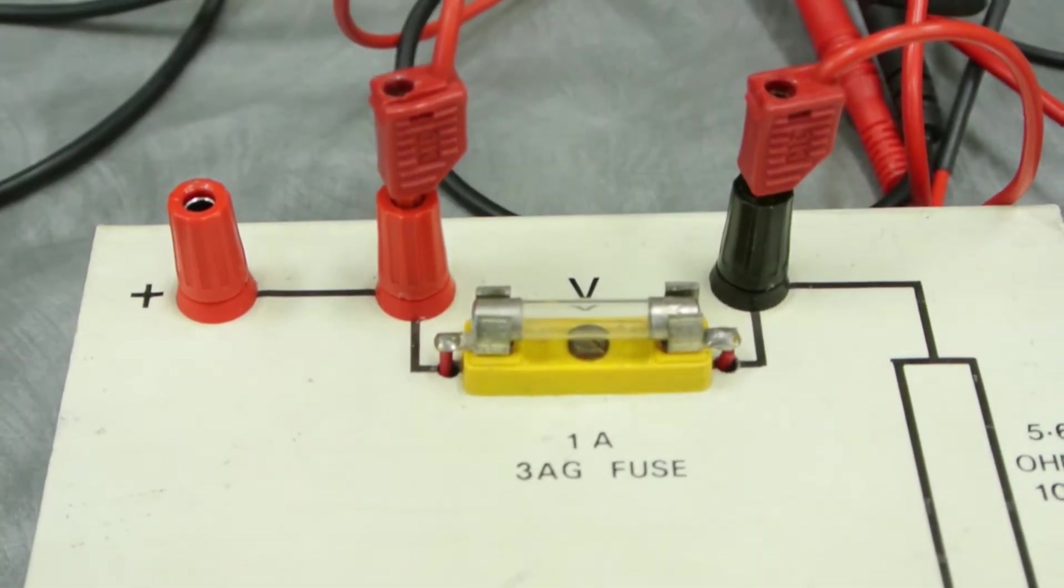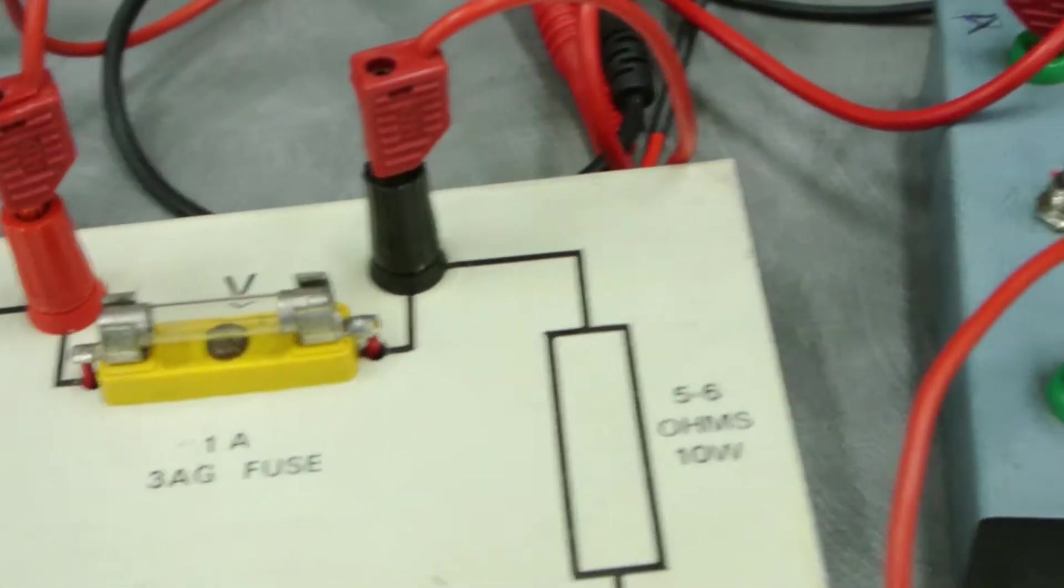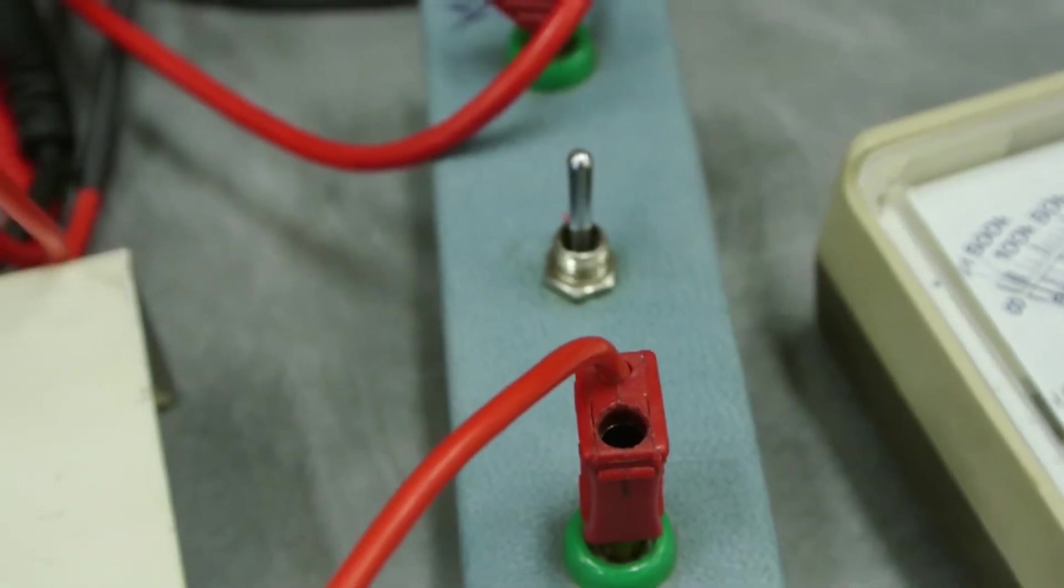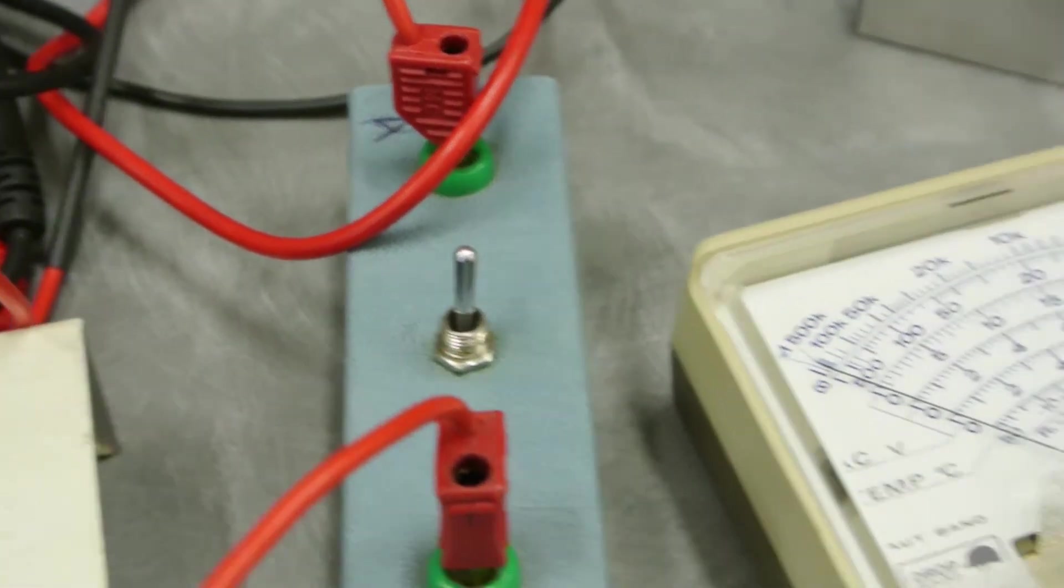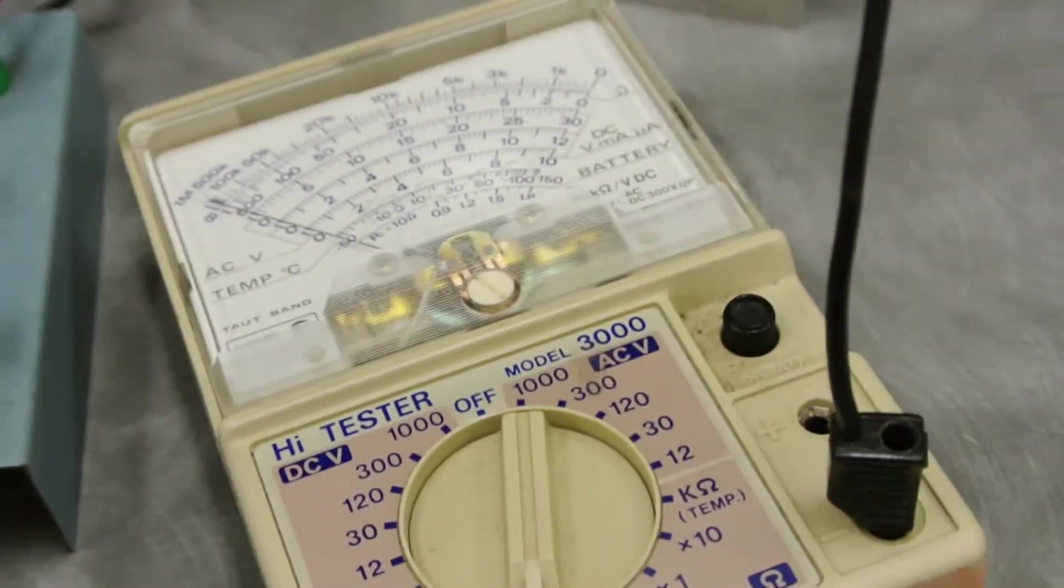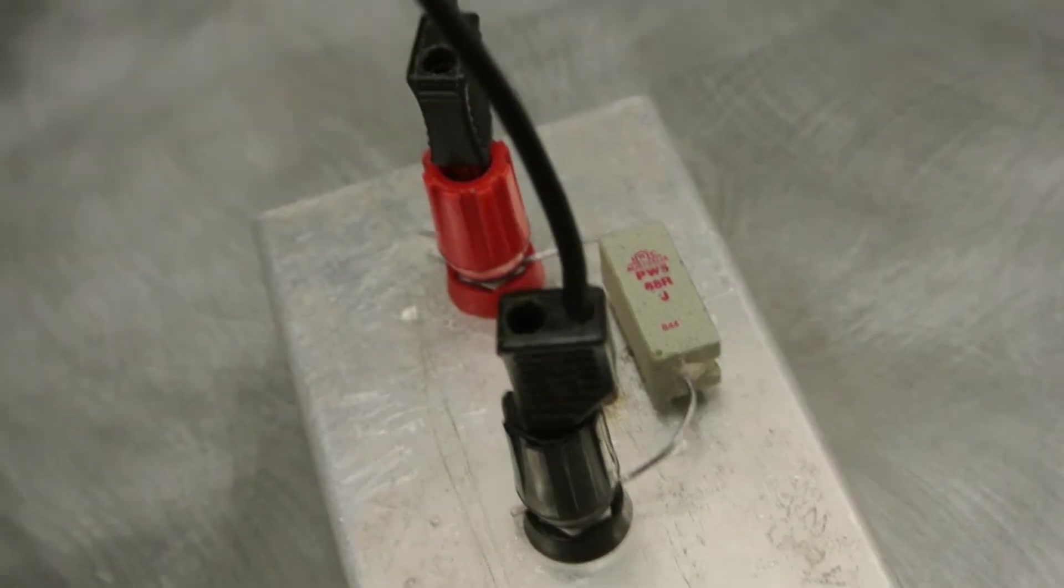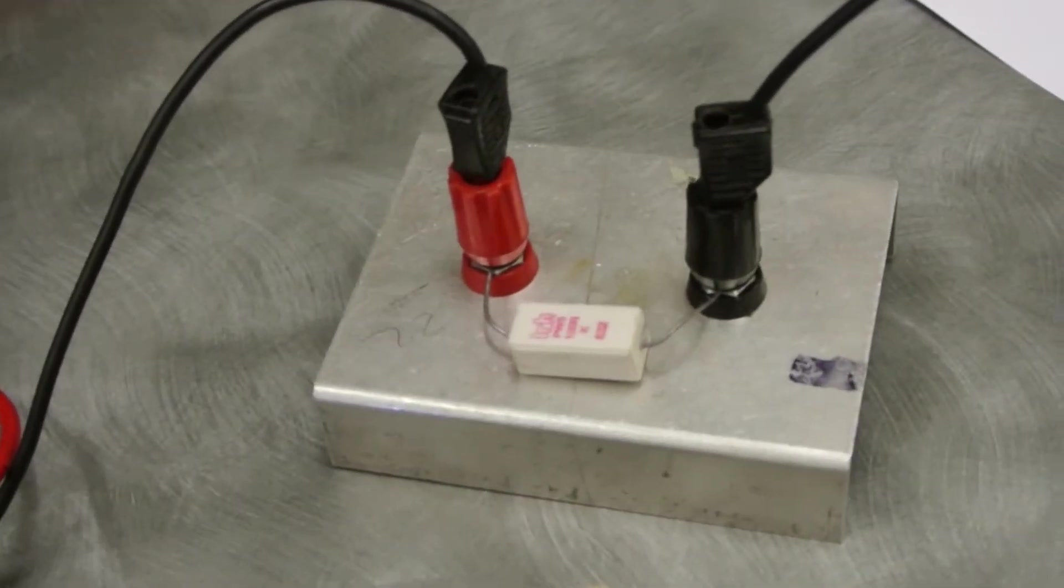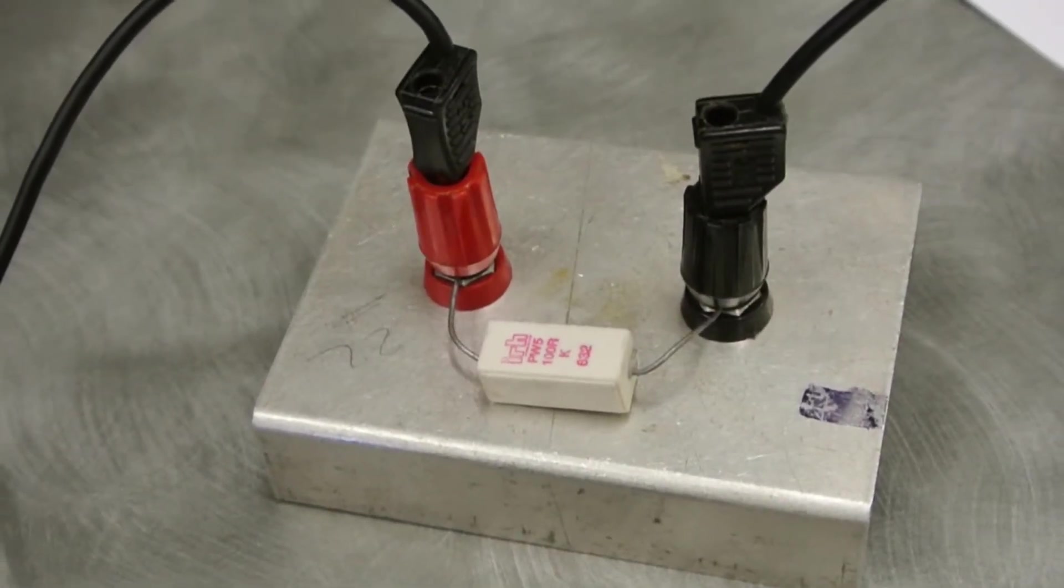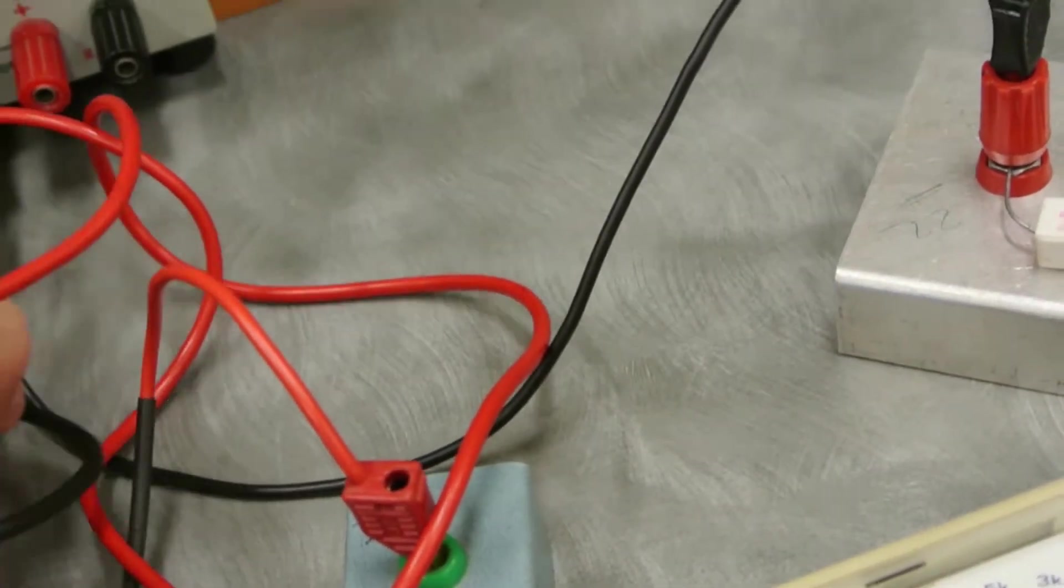When we wire the circuit up, the fuse always comes first. The fuse comes before the switch, then after the fuse comes the current meter, and then after the current meter came the 68 ohm resistor, and then the 100 ohm resistor.